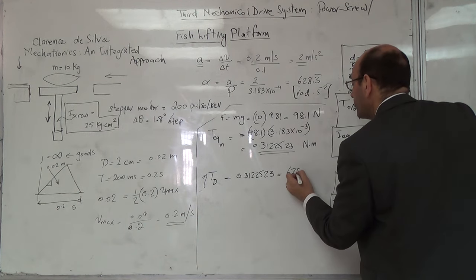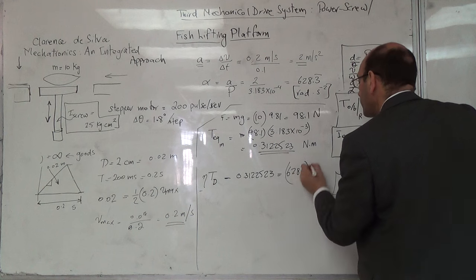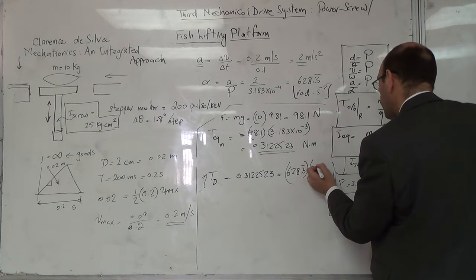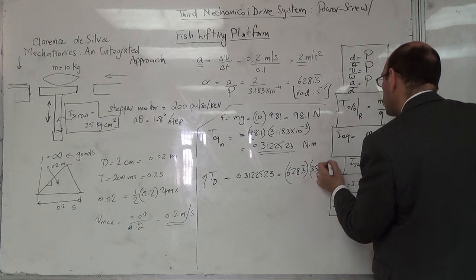It equals 628.3 multiplied by I total, which is 3.513 times 10 to the minus...